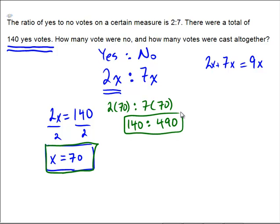So there were 140 yes votes, 140 yeses. There were thus 490 noes, which is the answer to this question, how many were no. And then how many altogether? That would be a total of 630 together. Those are the answers to this problem.